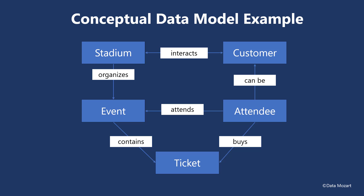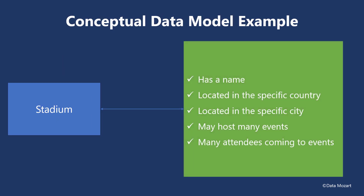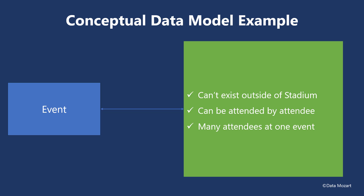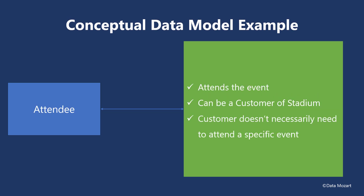You may also notice how these entities are interconnected. This high-level overview provides a simplified picture of the business workflow within the organization. Let's explain in common language what we see in this illustration. Our first entity is Stadium — it has a name and is located in a specific country and city, which uniquely identifies that stadium. Stadium may host many events and there can be many attendees coming to these events. Next, we have an Event — a specific event cannot exist outside of the stadium where it is scheduled to be held. An event can be attended by an attendee, and there can be many attendees for one event. Attendee is the entity that attends the event.